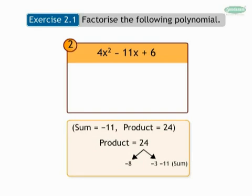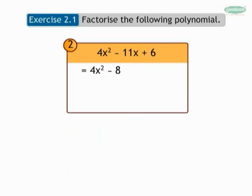Here our sum is minus 11 and product is 24. We split product 24 as minus 8 and minus 3. So here we get 4x squared minus 8x minus 3x plus 6.